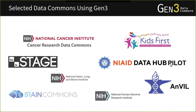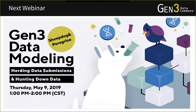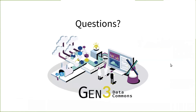For examples of data commons using the Gen3 software: we showed the Kids First example for granting data access through other applications. There are several other examples using our software in one way or another. For the next webinar, we'll be talking about data modeling using the services affectionately known as Sheepdog and Peregrine, scheduled for May 9th. Be sure to tune in.